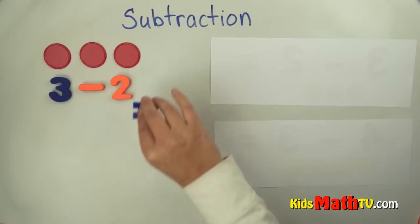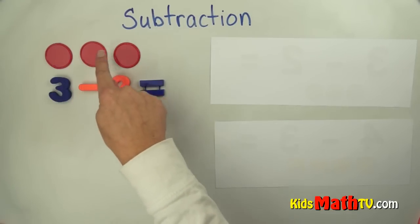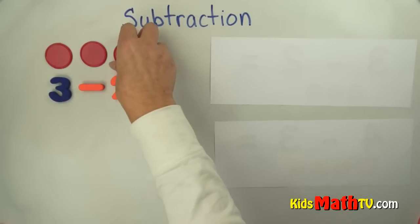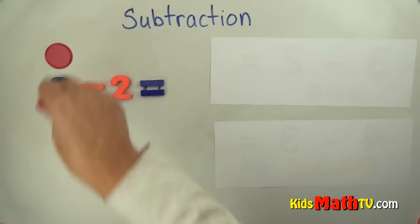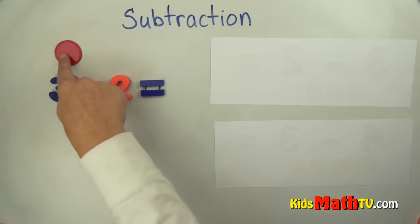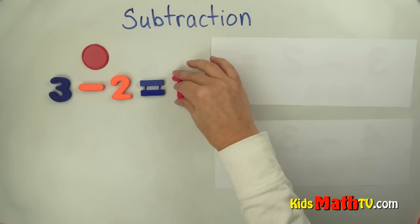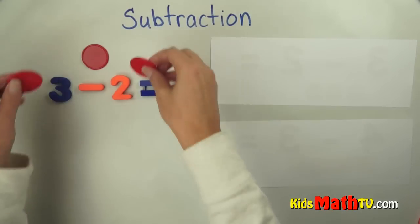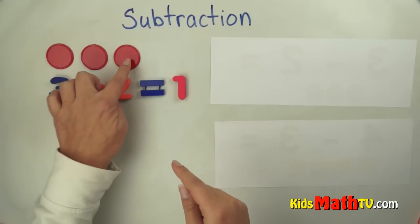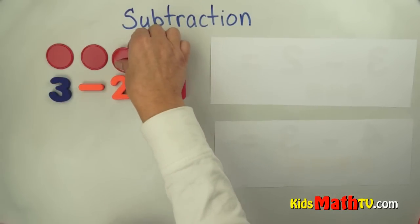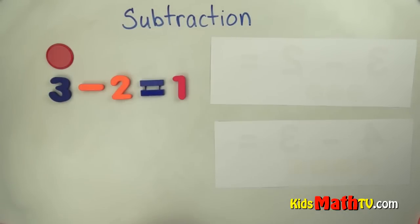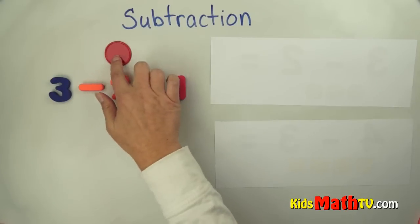And I want to find out what that equals. So one, two, three - I'm going to take away two. Take away one, take away two. How many are left over? There's only one left over. So three - one, two, three - take away two, one, two, equals one left over.